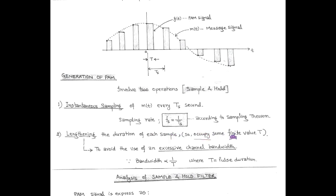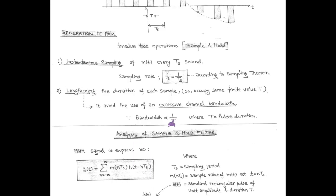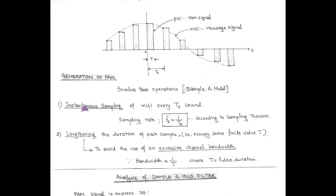Each pulse occupies some finite value of capital T. As the value of T, that is the width, increases, the channel bandwidth decreases, since bandwidth is inversely proportional to pulse duration capital T. For the generation of the PAM signal, there is an involvement of instantaneous sampling as well as lengthening the duration of each sample, that is called the sample and hold operation.